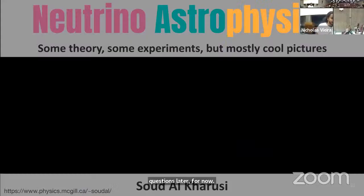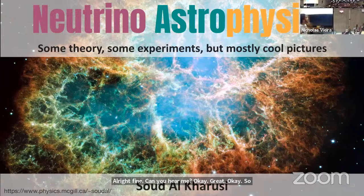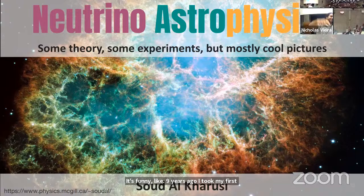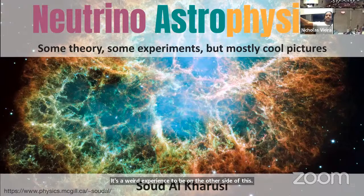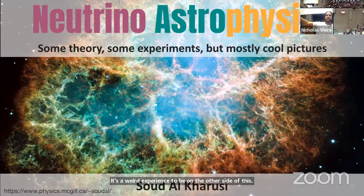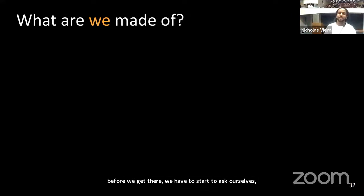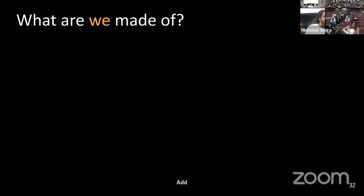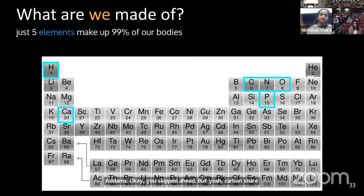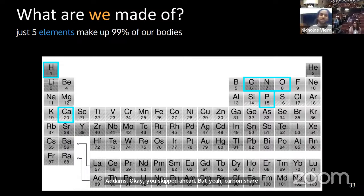I am Sud. It's funny — nine years ago I took my first physics lectures in this room and now I'm giving a talk here. I'm going to talk about neutrino astrophysics. We're going from the very big — general relativity and space-time — to the very, very small. Before we get there, we have to ask: what are we made of? Let's break our bodies down. We're made of atoms, and most of our bodies are made up of five elements. Elements are collections of atoms. This is a model of an atom you've probably seen before.